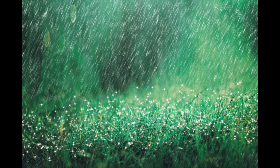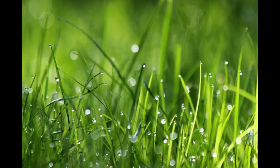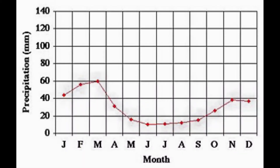Now let's talk about the precipitation of shrublands. The average precipitation is about 200 to 1,000 millimeters of rain per year. This graph shows the changes in precipitation per month. In January, precipitation is about 41 or 42 millimeters. In February it increases to about 58 or 59 millimeters. In March it increases a little more to about 60 millimeters, which is the maximum precipitation a shrubland can get.